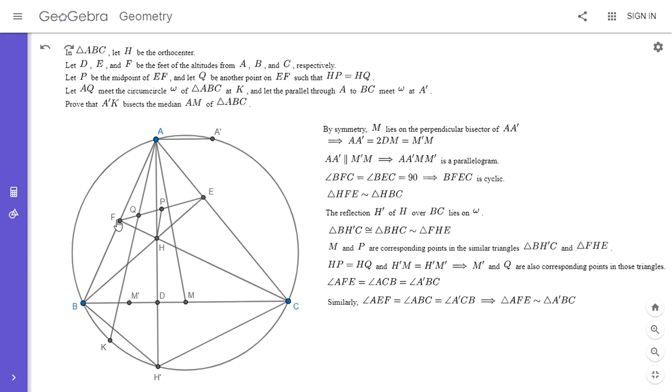And so basically, that means that the whole quadrilaterals, AFHE and A prime BH prime C have to be similar. All right. Because if you have two pairs of similar triangles, so BH prime C is similar to FHE and also A prime BC is similar to AFE. So that means those quadrilaterals as a whole have to be similar.